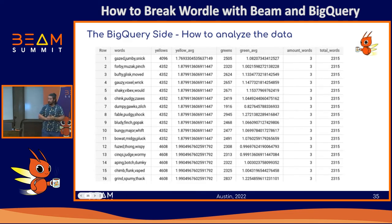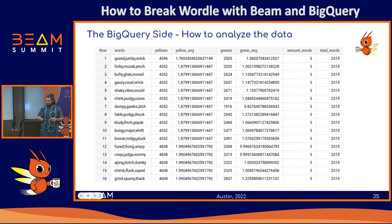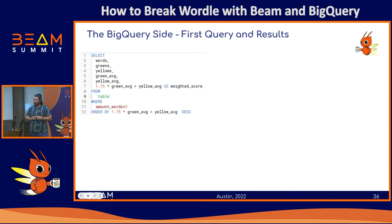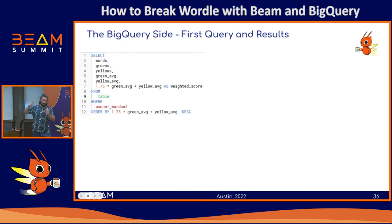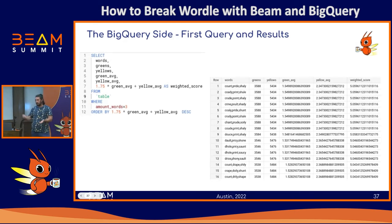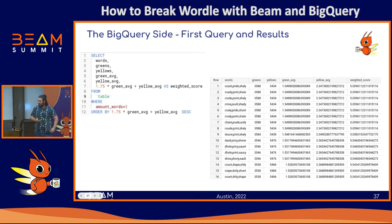This is how the BigQuery table looks: we have the words, the average number of greens, the average number of yellows, and whether it's a three-word or two-word combination. The query to get the top three combinations is straightforward — just selecting a weighted score of 1 to 1.75 as a ranking and ordering by that. If we do this, we get the words count, pride, and charily. If you check the weighted score, pretty much all of them are close to five-point-something, so there's not a big difference between taking the last one versus the first one — on average you'll do pretty much the same.